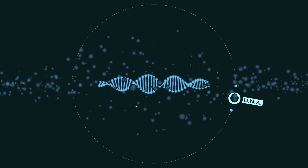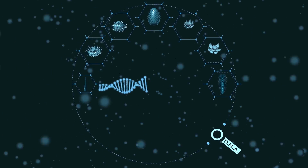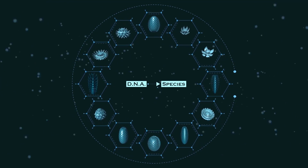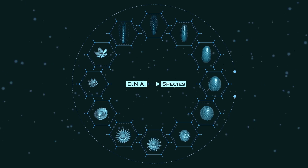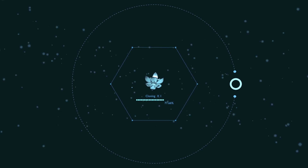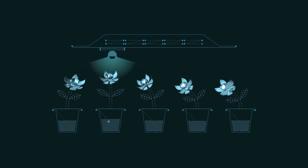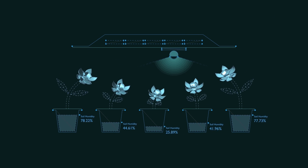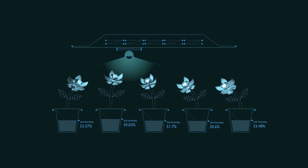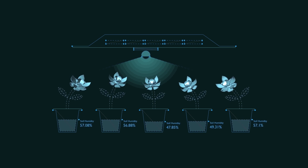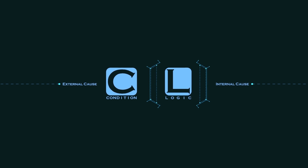Living beings are shaped by DNA, and species vary with different DNA. It also defines the relationship between species. However, individuals from the same species may differ from each other due to the environment. For instance, sunlight and soil moisture affect the plants. Therefore, individuals that are alike often come from similar logic and atmosphere.